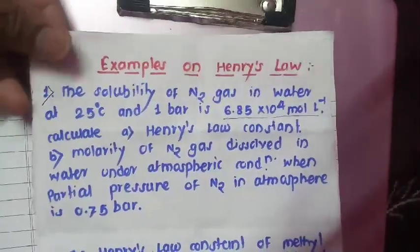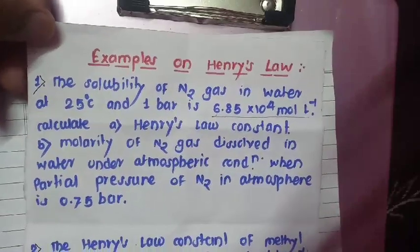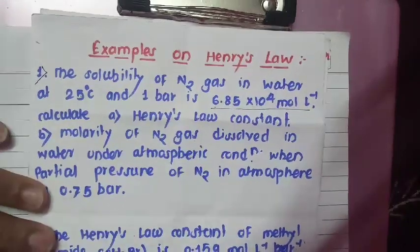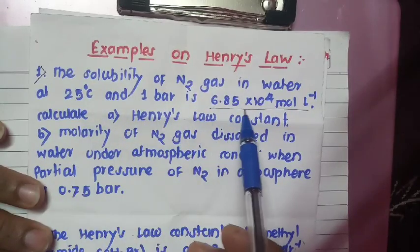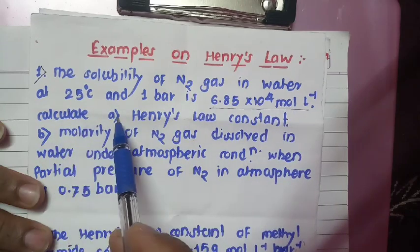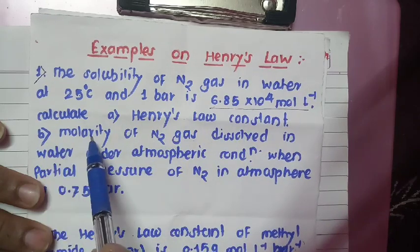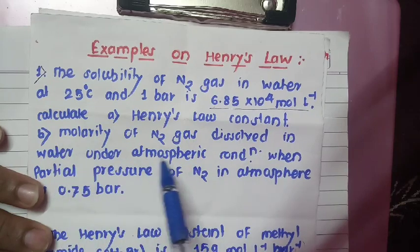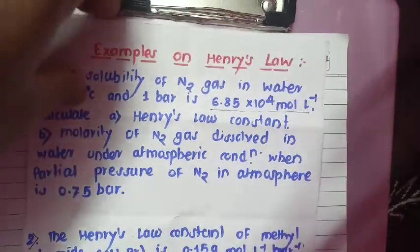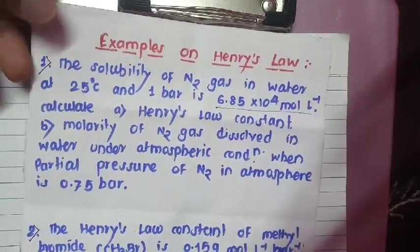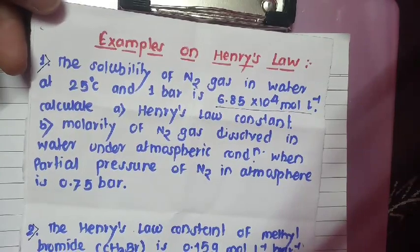Good morning friends. Today we are going to study examples on Henry's law. This is my sixth lecture on the topic of solutions. The first problem: the solubility of nitrogen gas in water at 25°C and one bar is 6.85×10⁻⁴ mole per liter. We have to calculate first the Henry's law constant, and second the molarity of nitrogen gas dissolved in water under atmospheric conditions.